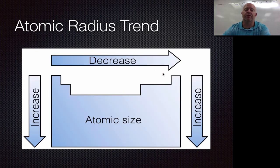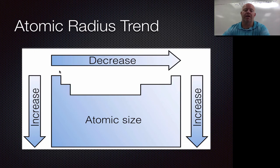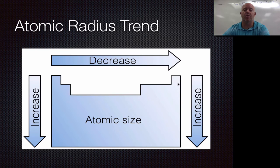From that information we can determine the basic trend: as you move from left to right, atomic size gets smaller, and as you move down the table it gets bigger. So our biggest element is francium, and our smallest in size is actually helium. Even though helium is heavier than hydrogen, it's actually smaller in size than hydrogen is.